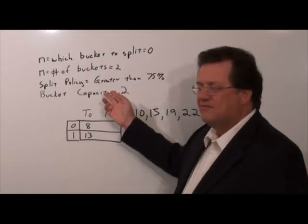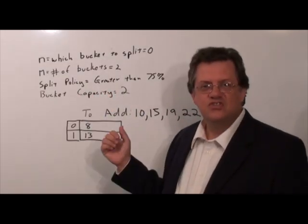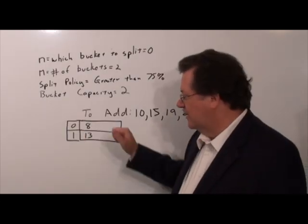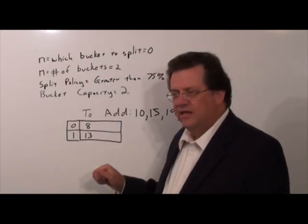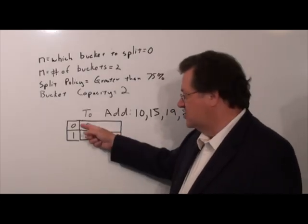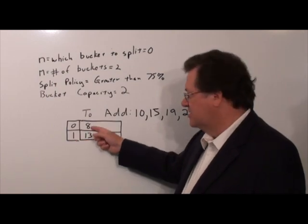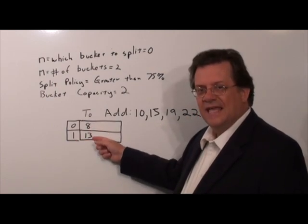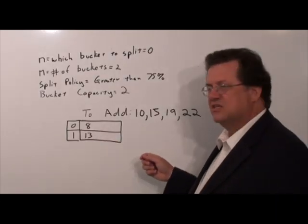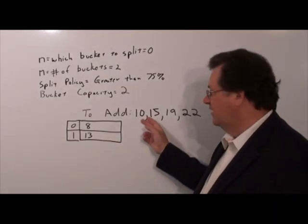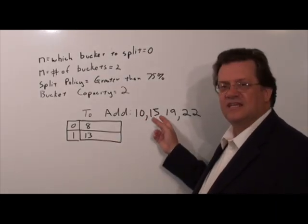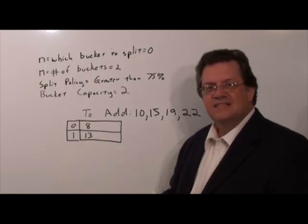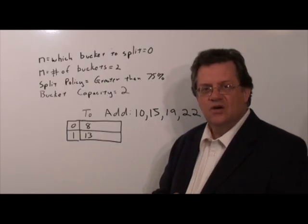The third thing we have is a bucket capacity, which we'll assume is 2 in this example. Starting out we have two buckets identified as bucket 0 and bucket 1. Bucket 0 has the value 8, bucket 1 has the value 13. And we want to add the following items in order: 10, 15, 19, and 22. So let's add the items and walk through what's going on.